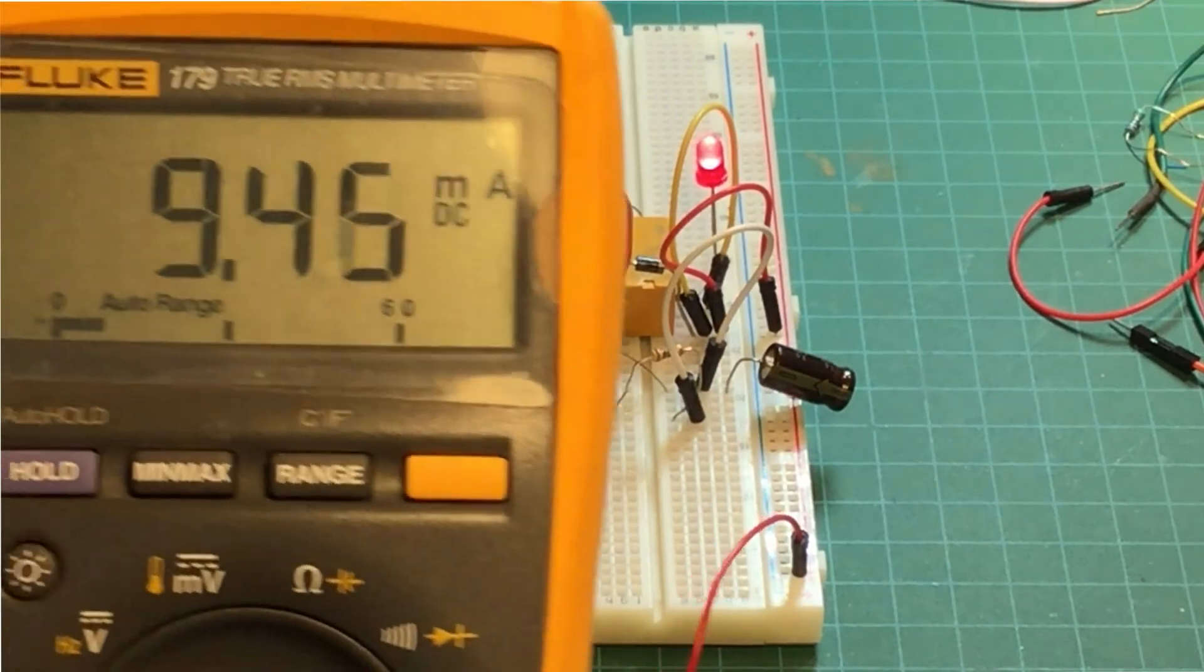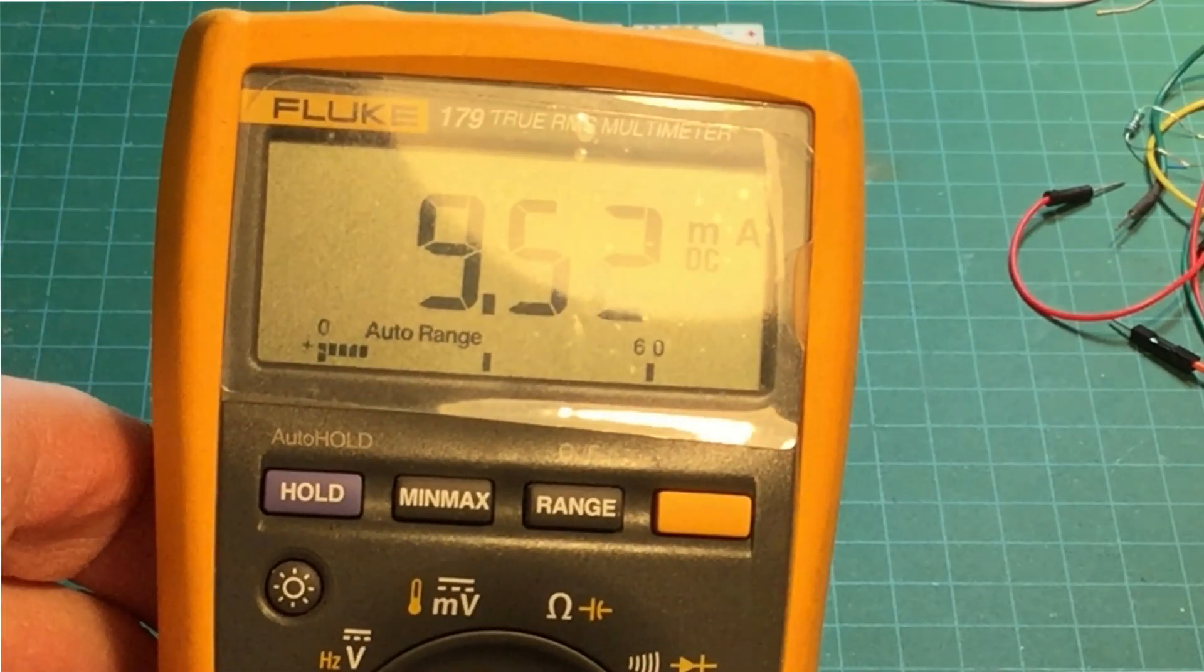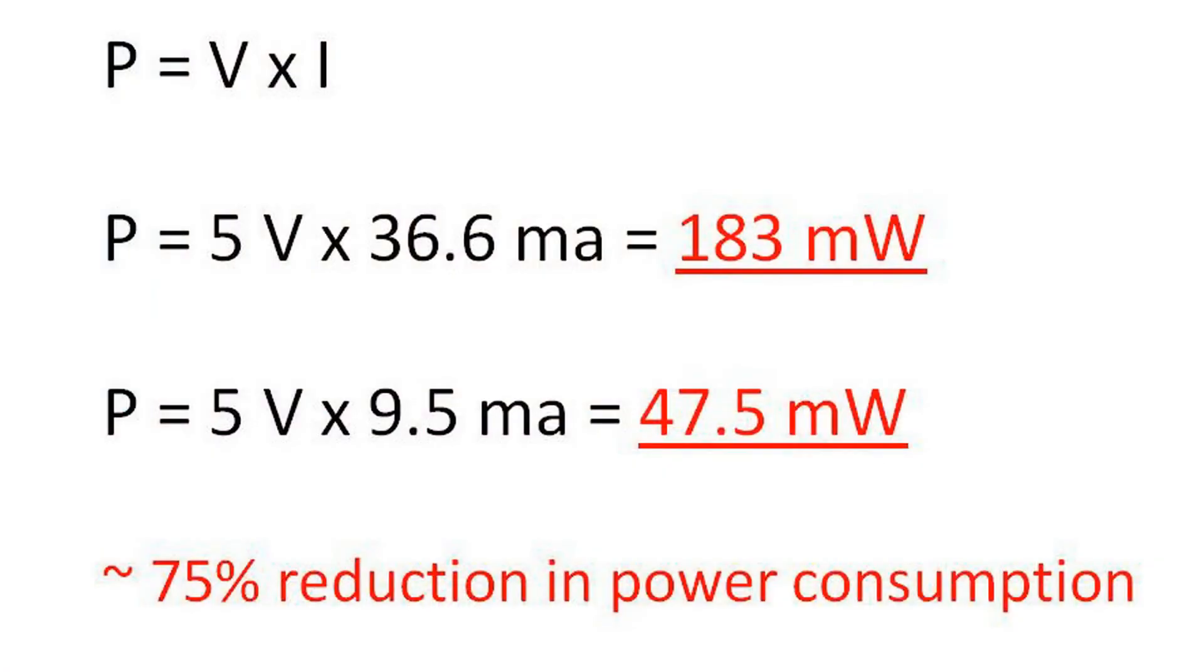So now let's take a look at the current. Here it is, it's around 9.5 milliamps, which is exactly where we want to be. So everything's working. Let's just take a quick look at the approximate power consumption. So you can see that with just 5 volts applied to our relay, we're using about 183 milliwatts. But with our circuit in place, we're only using about 47.5 milliwatts. So this is an approximate 75% reduction in power, which I think is pretty impressive.